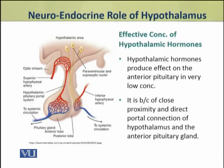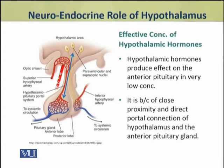Hypothalamic hormones, even in very low concentration, have a large effect on the anterior pituitary. This is because of the close proximity and direct portal connection between the hypothalamus and anterior pituitary. The anterior pituitary is directly linked with the hypothalamus, and the blood connection is also direct and close, so even a small amount of hormones has a considerable effect on the pituitary.